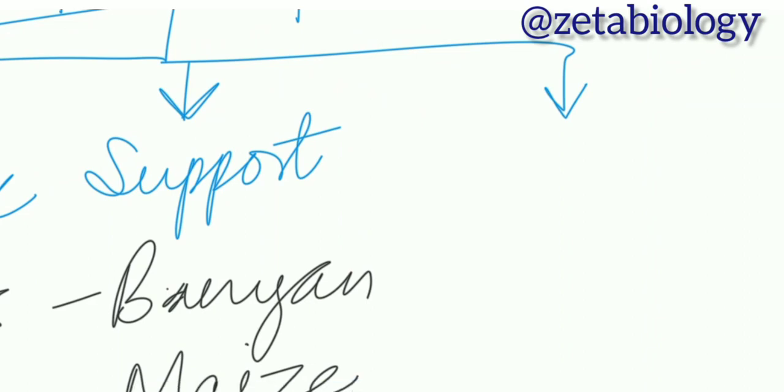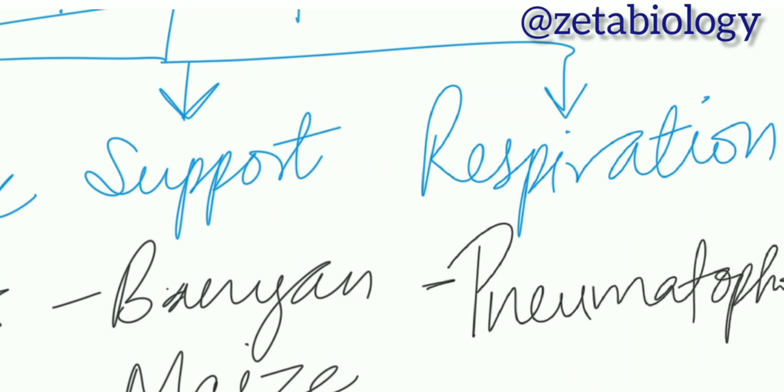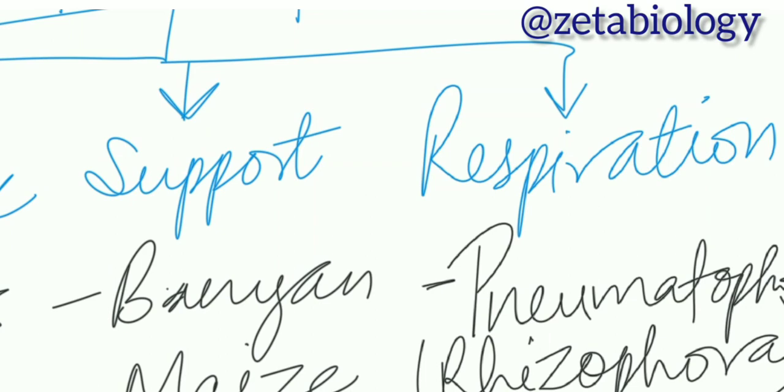Third, for respiration. Roots are used as the organ for respiration in plants, mainly in pneumatophores, also called nyctophores.